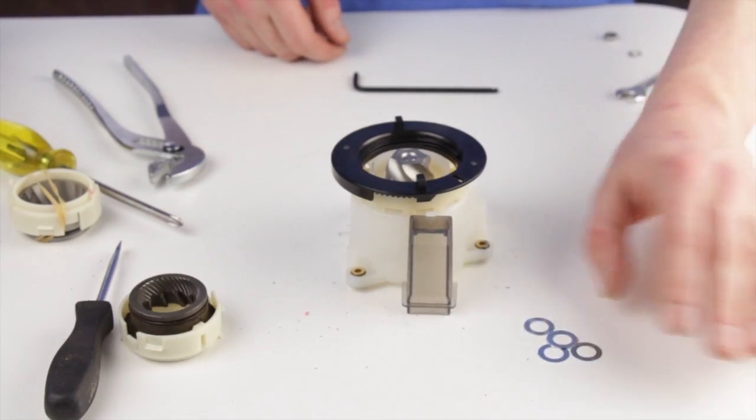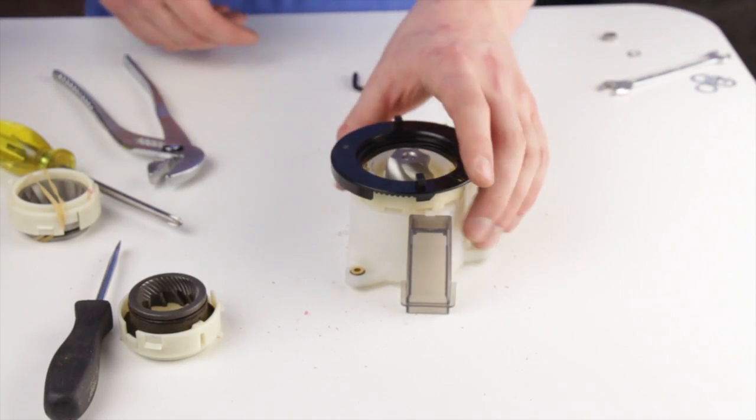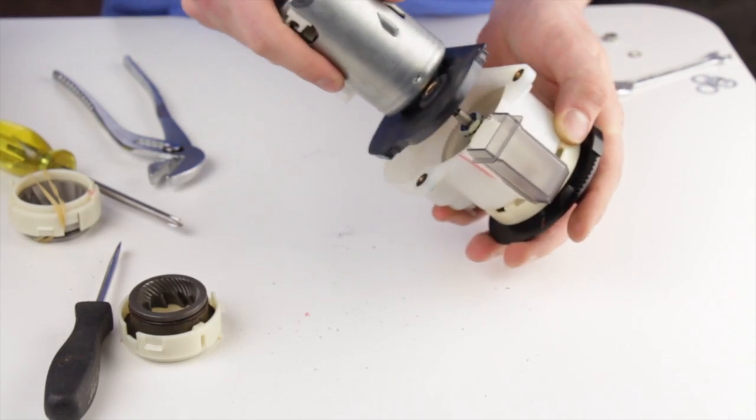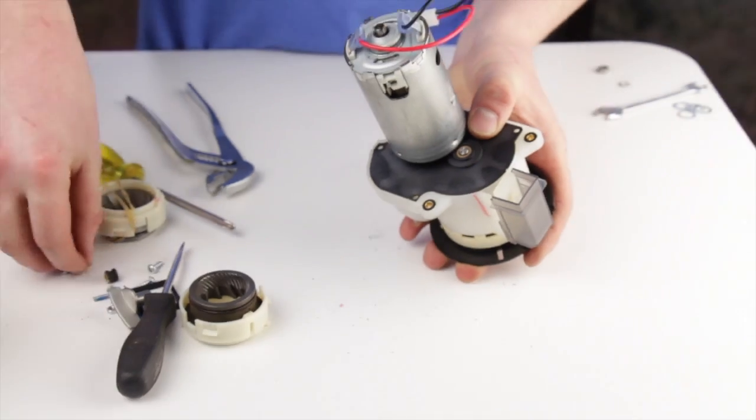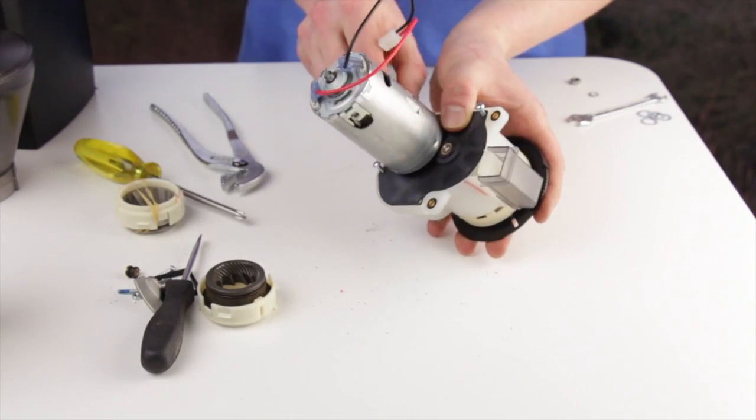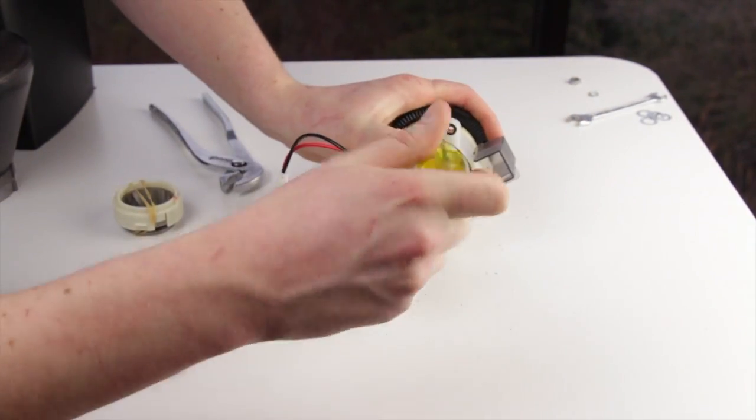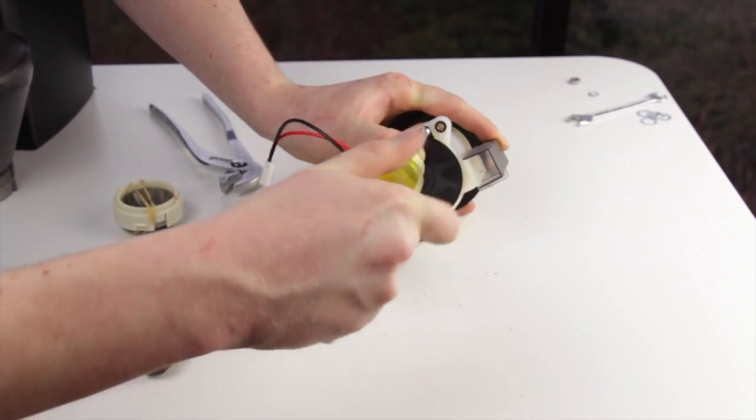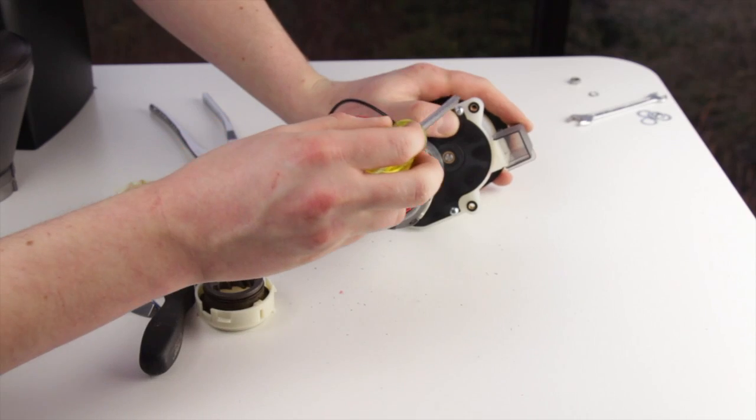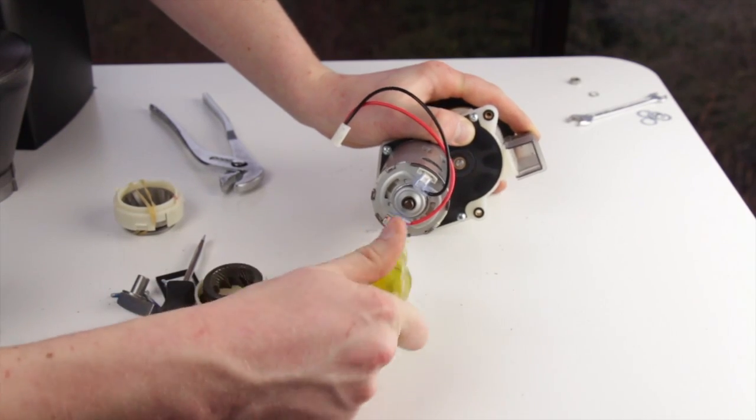I do have some extra washers that I did not need to make the gearbox assembly work properly. I'll go ahead and discard these. I'm ready to put the motor back onto the gearbox housing. Do not over tighten these screws, they do not need to be very tight. Tighten the screws in an X pattern. This ensures that the motor plate is pulled down straight.